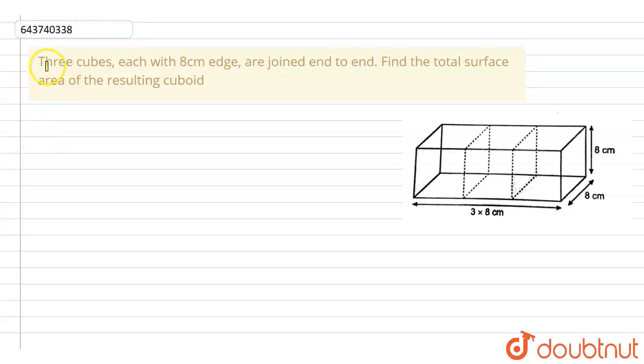In this question we are given that we have three cubes, each of eight centimeter edge, are joined end to end. We have to find the total surface area of the resulting cuboid.